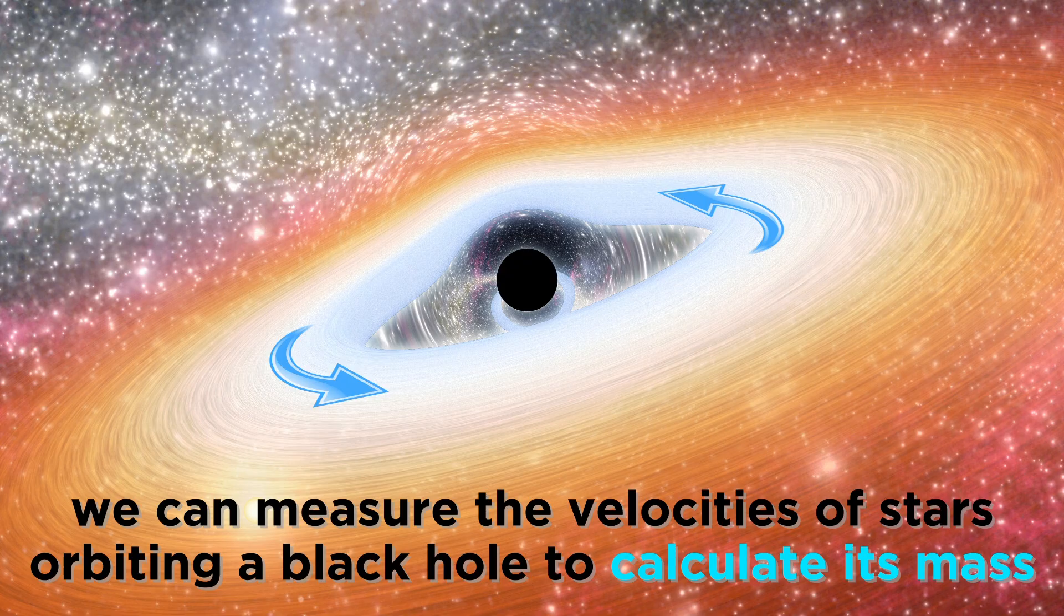Sometimes we can even see large collections of stars moving very fast around a region of seemingly empty space. By measuring their velocities, we can calculate the mass of what they must be orbiting, and it will typically be many solar masses, and that's a black hole too.